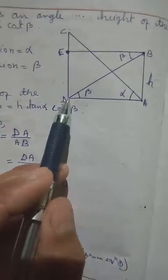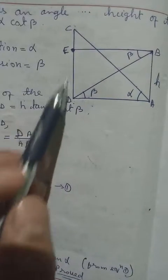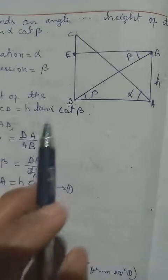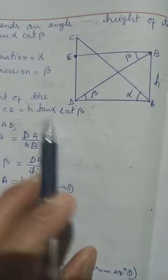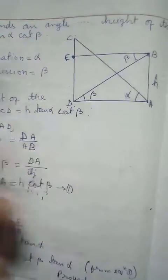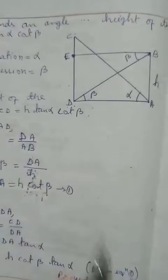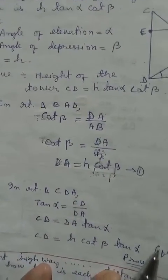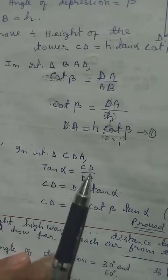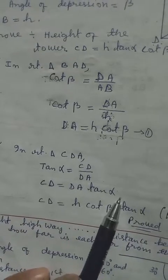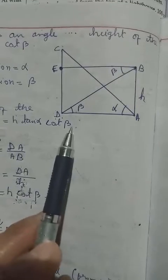Drawing it properly: the tower makes angle alpha at point A. Using tan alpha in triangle CDA: tan alpha = CD/DA (perpendicular by base). Cross multiplying: DA = CD/tan(alpha), which we leave as DA·tan(alpha) = CD for now. We cannot simplify further yet, so we proceed to use cot beta.